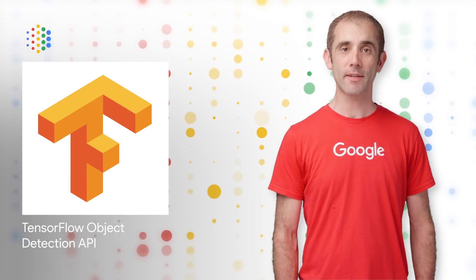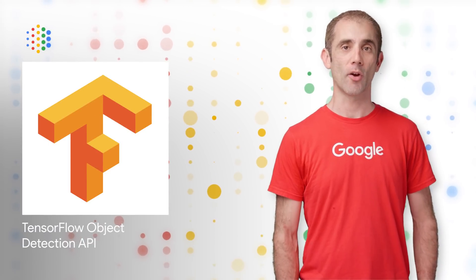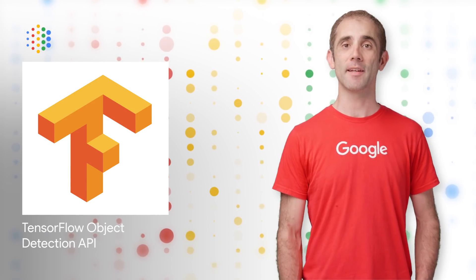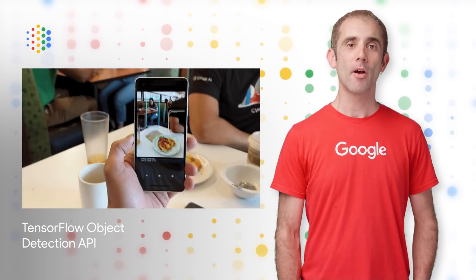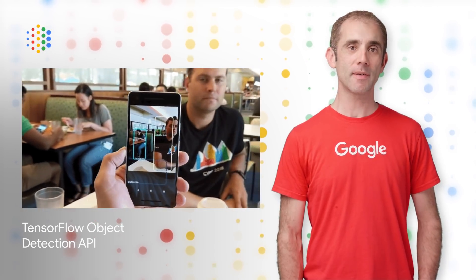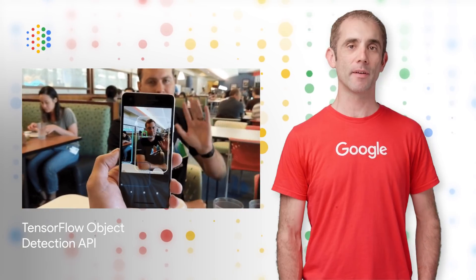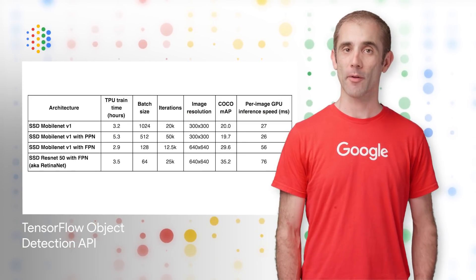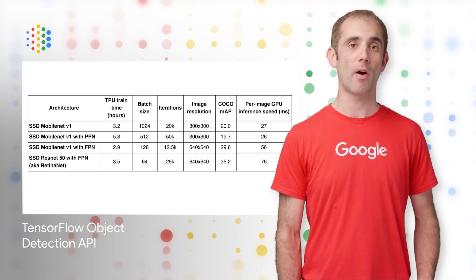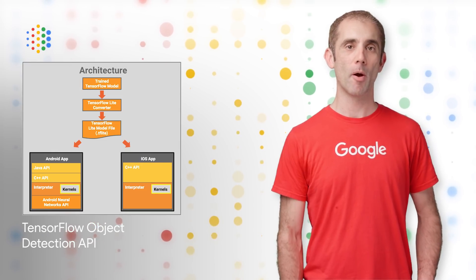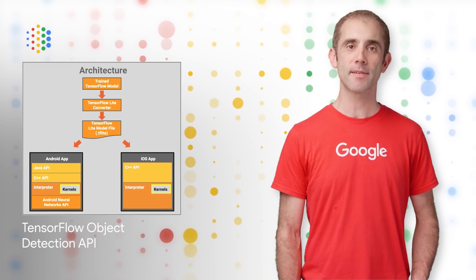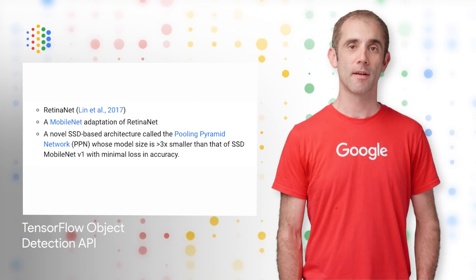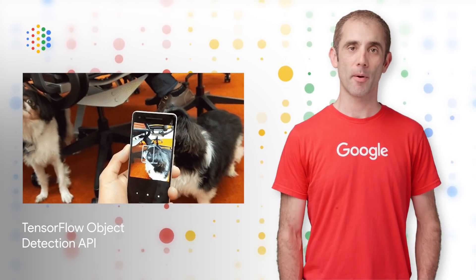The TensorFlow Object Detection API is an open source framework built on top of TensorFlow that makes it easy to construct, train, and deploy object detection models. We recently released several additions to the API, including support for accelerated training of object detection models via cloud TPUs, improving the mobile deployment process, and several new model architecture definitions. A link to the new tutorial is on the post.